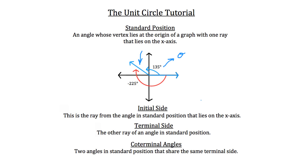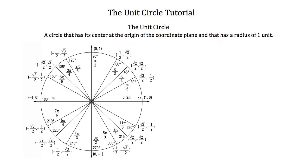So now that you know everything about angles in standard position, let's take a look at the actual unit circle. The unit circle is a circle that has its center at the origin of the coordinate plane and has a radius of one unit. Notice here that this circle is centered at the origin of the coordinate plane. This is going to be your y-axis and this is going to be your x-axis, so the center of this circle lies right at the origin of the coordinate plane.